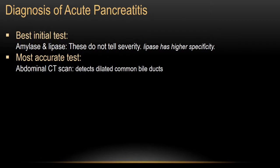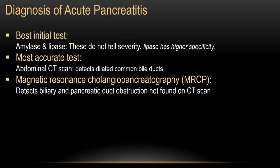MRCP — magnetic resonance cholangiopancreatography — is a very good tool to diagnose acute pancreatitis. It detects biliary and pancreatic duct obstruction that may not be found on CT scan. You can miss them on CT scan, but you do not miss them on MRCP.